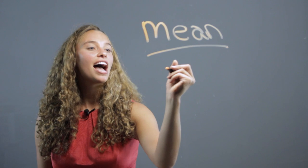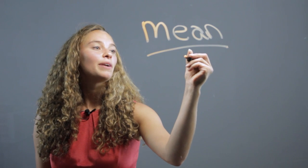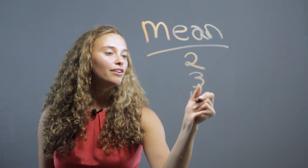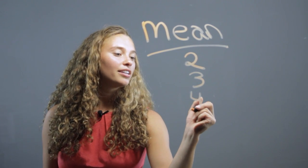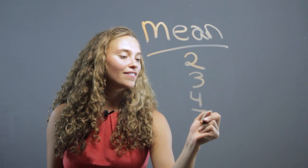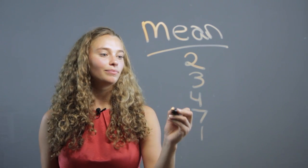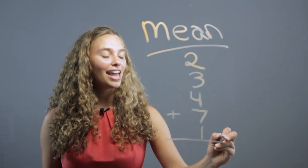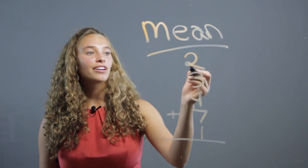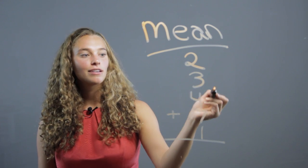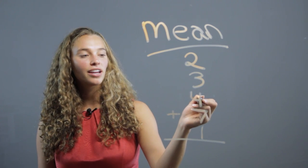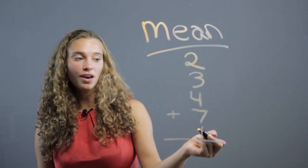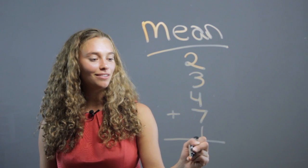So let's say we have the numbers 2, 3, 4, 7, and 1. We start off by adding them all together. 2 plus 3 is 5, plus 4 is 9, plus 1 is 10, plus 7 is 17.